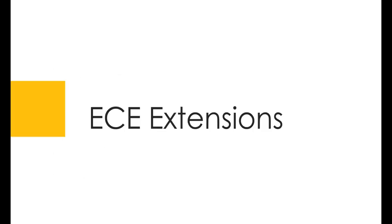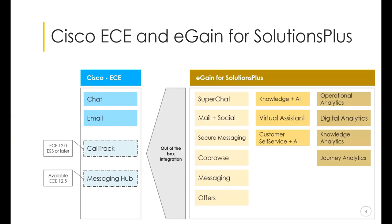Let's talk about the ECE extensions that are available. Abhinav will be talking about exciting features such as Call Track, released earlier this year, as well as Messaging Hub, now available as part of the 12.5 update. Cisco ECE is the OEM version of eGain email and chat — it's the replacement for EIM-WIM. With Cisco 11.6, ECE is available as part of your voice enterprise license at no extra cost, so we see a lot of customers migrating from EIM-WIM to ECE as well as net new adoption.